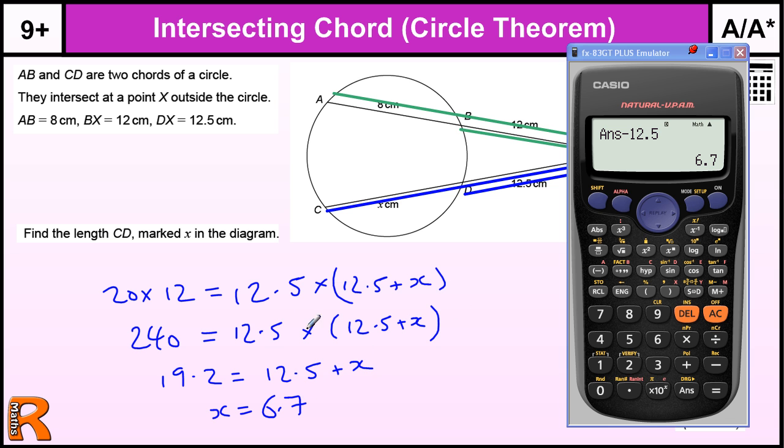So we have X equals 6.7. Now you could have multiplied out this bracket, took away the 12.5 squared which is 156.25, and then divided by 12.5 to give the same answer 6.7 for 4 marks.